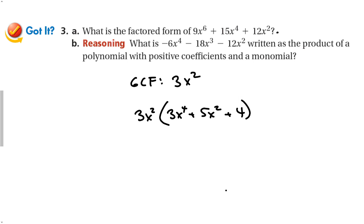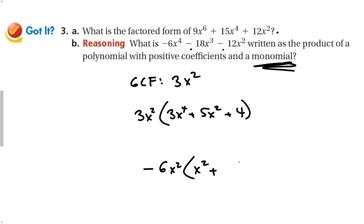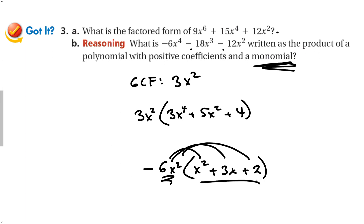What is −6x⁴ − 18x³ − 12x² written as a product of a polynomial with positive coefficients and a monomial? All terms have a negative in the front. We can factor out a negative number — negative 6x². That leaves a positive polynomial: x² + 3x + 2. If you distribute negative 6x² back to those three terms, you get the original expression.